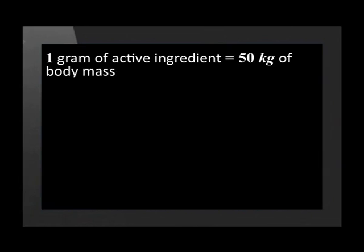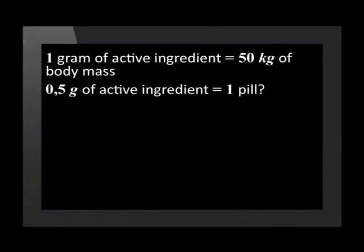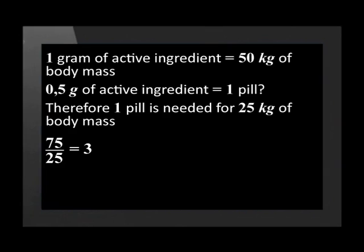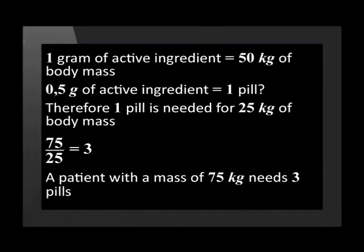One gram of the active ingredient is needed for every 50 kilograms of body mass, and there is half a gram of active ingredient in one pill. Therefore one pill is needed for every 25 kilograms of body mass. The patient weighs 75 kilograms. Dividing 75 by 25 equals three. This patient needs three pills.